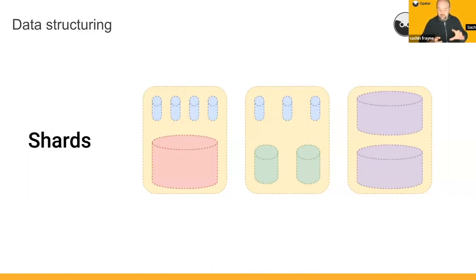We like to stick our Elasticsearch shards, Elasticsearch and OpenSearch shards, to approximately 10 gigabytes to 50 gigabytes.